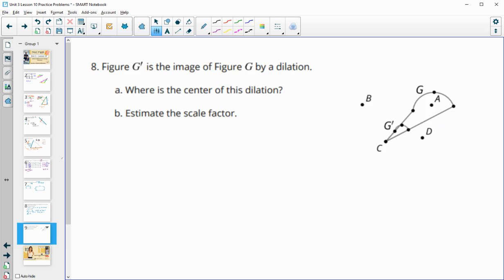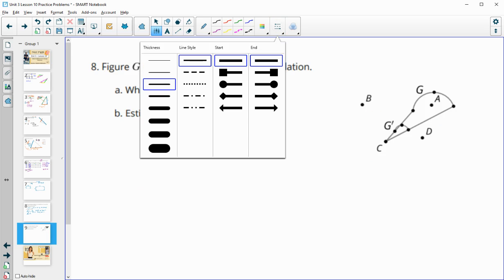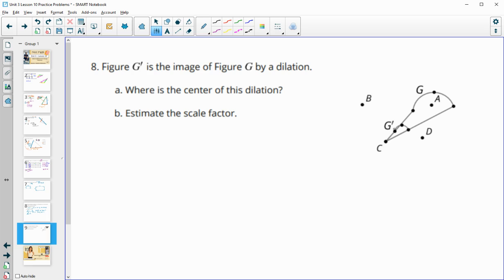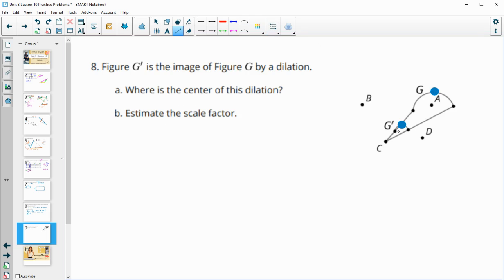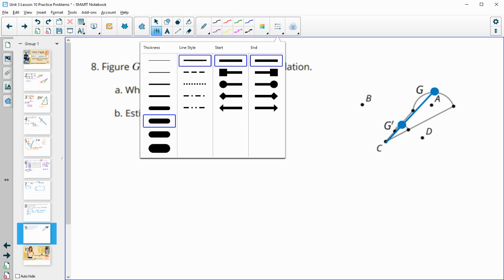Number eight, G prime is the image of G. So let's find that in our picture here. So here's G and here's G prime. Where is the center of dilation here? So remember that the center of dilation goes through both the image and the original. So if we go like that, then we can see that our center of dilation is point C.